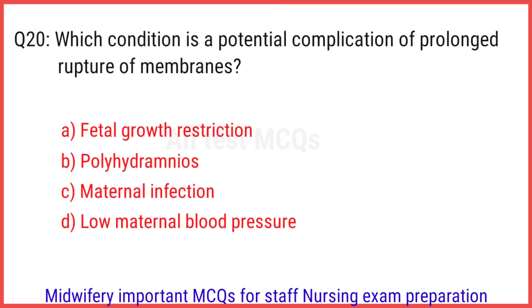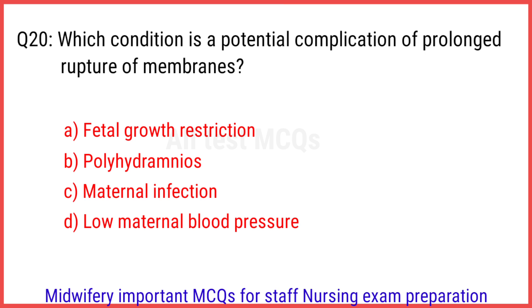Q20. Which condition is a potential complication of prolonged rupture of membranes? The right answer is option C: Maternal infection.